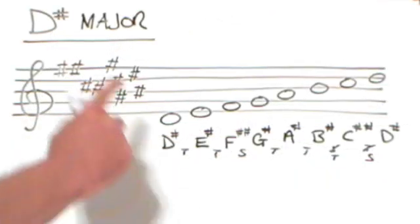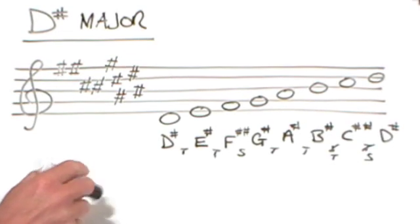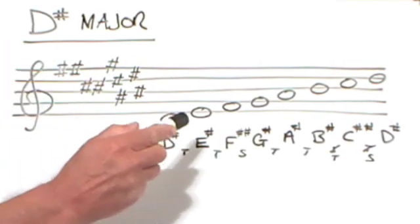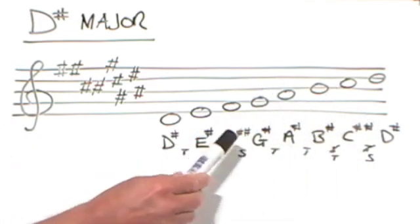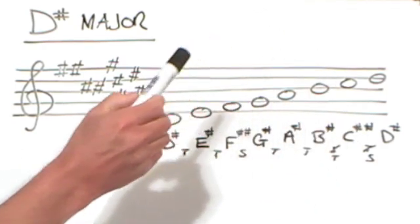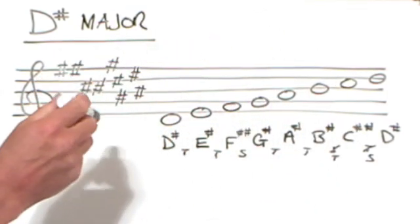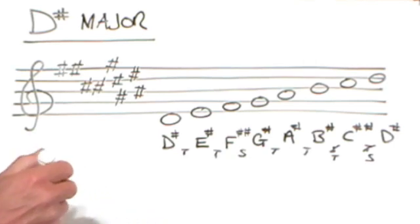Okay. So I've written this out again a little more neatly at the top of the board here. I want you to notice that the order of double sharps is already hauntingly familiar. Father, Charles. So this begins to give us some prediction about where this is going.